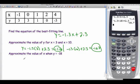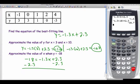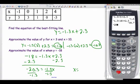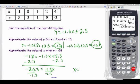Approximate the value of x when y equals negative 18. So now we're going to have to solve an equation. So negative 18 equals negative 1.3x plus 2.3. So subtract 2.3. That gives us negative 20.3 equals negative 1.3x. Divide by negative 1.3. That one I don't know off the top of my head, so let's see. Negative 20.3 divided by negative 1.3. And that's about 15.6.